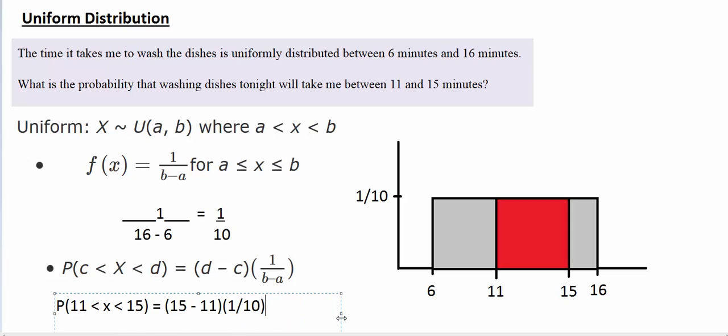I'll stretch this out so we can see it. 15 - 11 would be 4 times 1/10, which would be 0.4. So there's a 40% chance that I can get the dishes washed between 11 and 15 minutes.